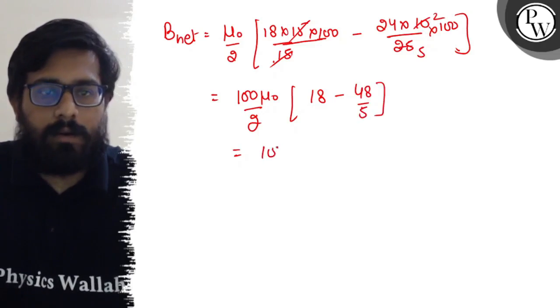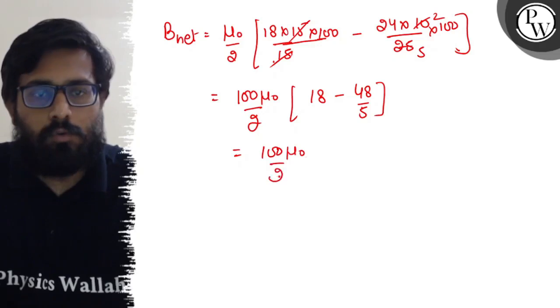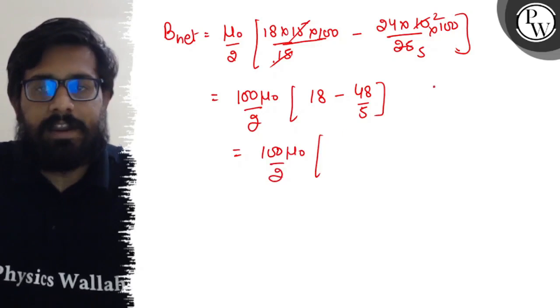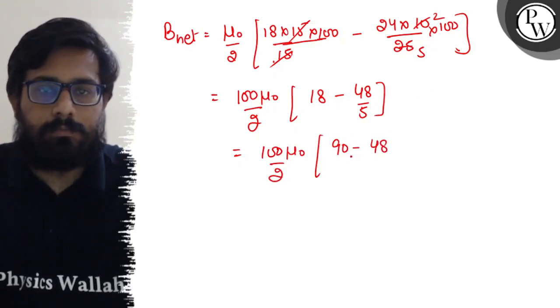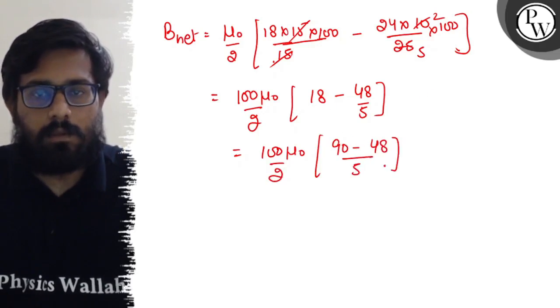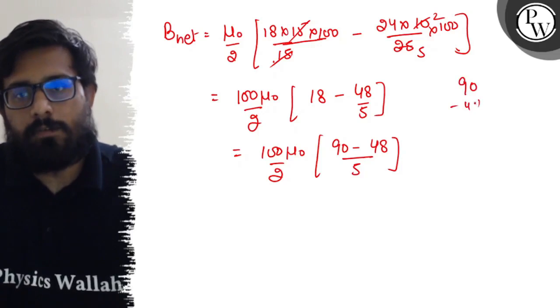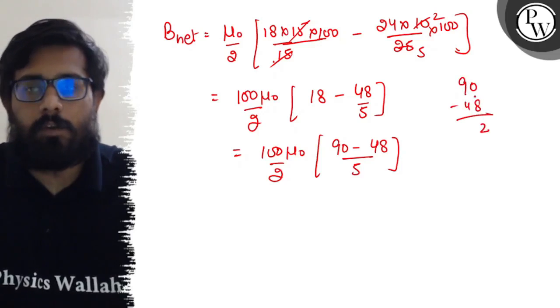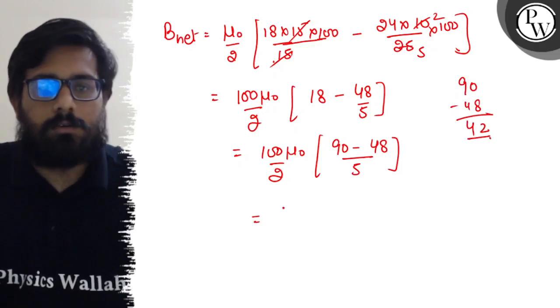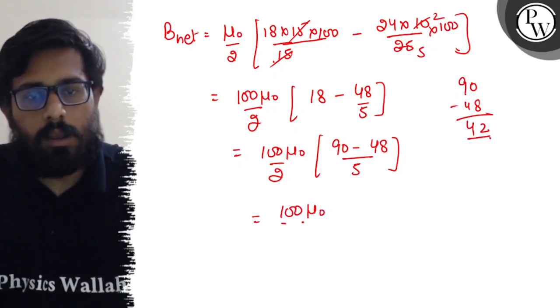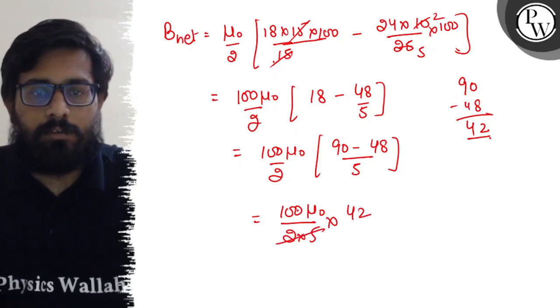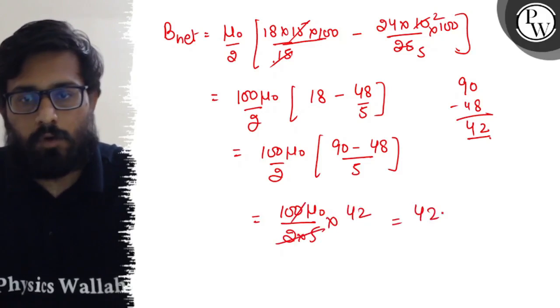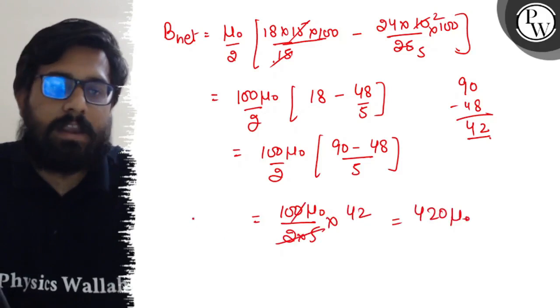So 100 mu naught upon 2. Solving it, 18 minus 48 by 5 comes out to be minus 42 by 5, and from here we got a value. So 100 mu naught upon 2 into 5 into 42. Solving it gives 420 mu naught as the value of B_net.